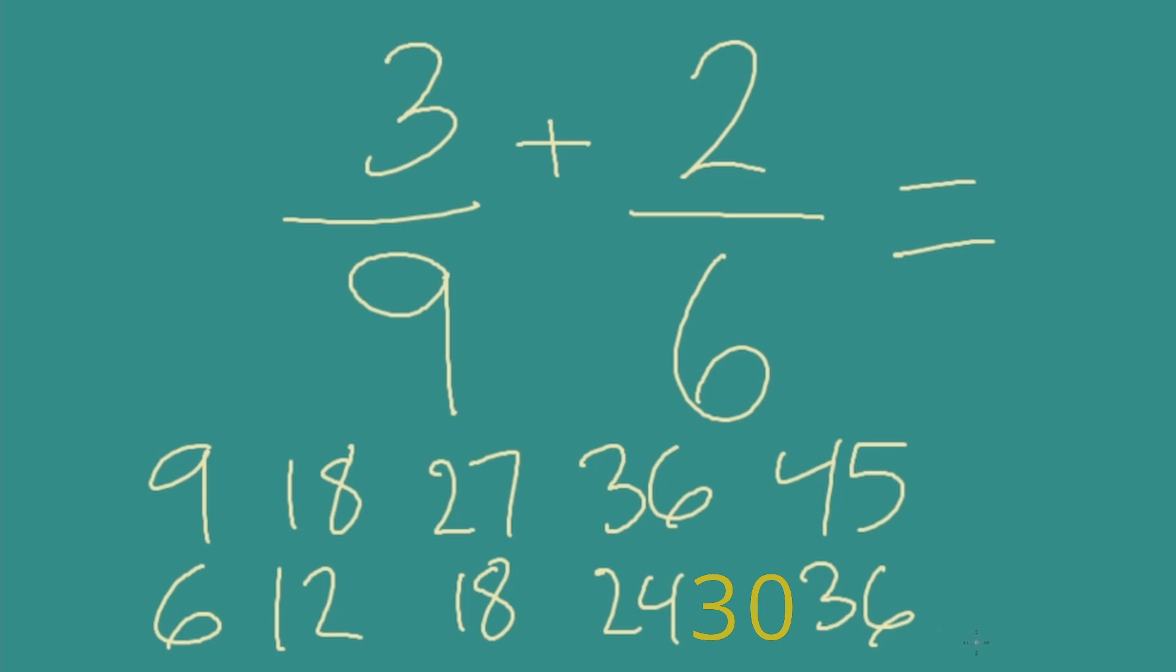Since we're looking for a shared or common denominator, do you see any numbers that appear on both lists? I see 18 and 36. We just found that 18 and 36 are both shared denominators that we could use to solve this problem. But which one do we want to use? Either one can get us to the correct solution, but the smaller one, in this case 18, should be easier to work with. So we're going to use 18 as a denominator.